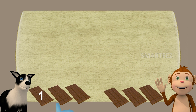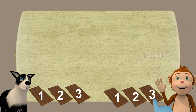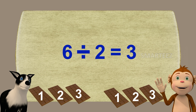I split six chocolates among the two of you. Let's see how many chocolates each one has — that's one, two, and three for Byra, and that's one, two, three for Rangu as well. You got three chocolates each. So when we split six chocolates between two people, each one gets three chocolates. Here we can say six divided by two is three.